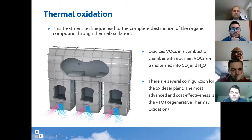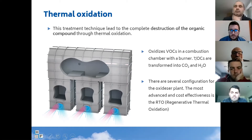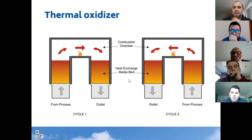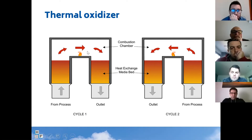There are several configurations for an oxidation plant. One of the most common is regenerative thermal oxidation. We are going deeply into this technology because it is the most used, the most convenient in terms of energy recovery and capital investment — though this depends case by case. How it works: the gas with the VOC goes inside the ceramic bed, then we have the oxidation chamber, and then the flow goes outside again through the heat exchange media bed.